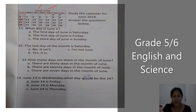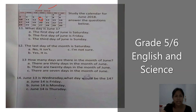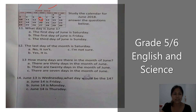Let's see — Sunday, Monday, Tuesday, Wednesday, Thursday, Friday, Saturday. Choose the best answer: A — June 14 is Friday. B — June 14 is Monday. C — June 14 is Thursday.